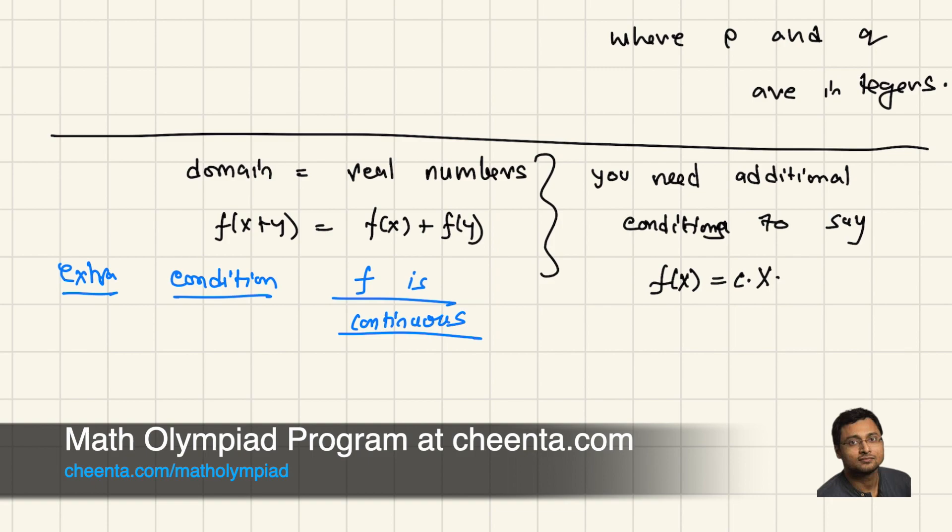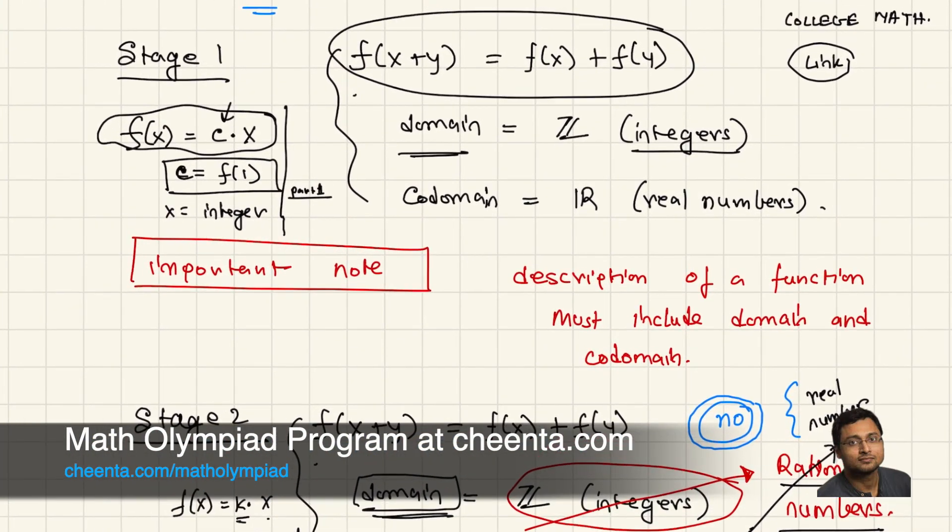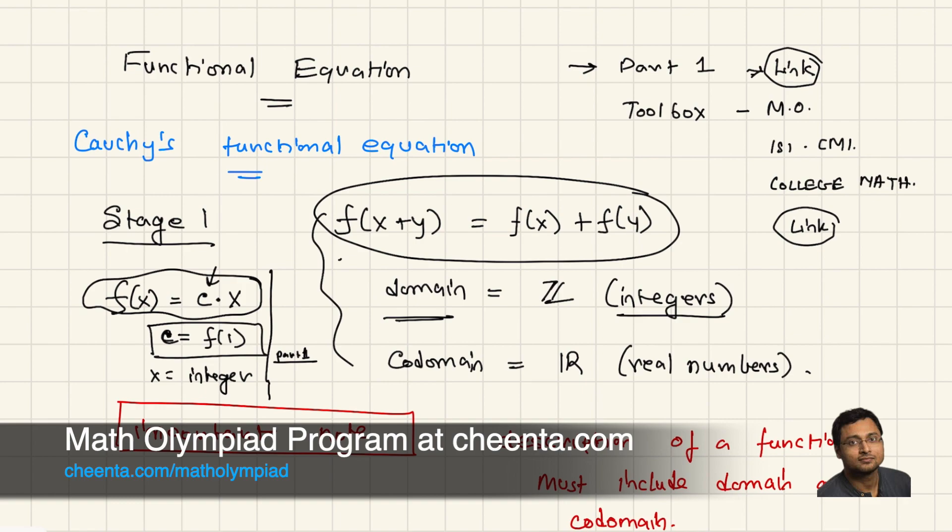Assume that f is continuous. If you do that, can you find out what is f(x)? Well, it will be some constant times x. That's your goal. Show that f(x) is equals to constant times x. We handle the real number case in our main live program. We will not do it in this video.